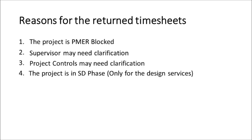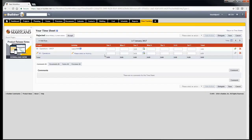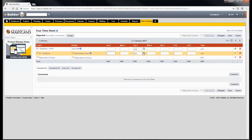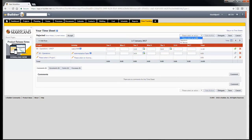If you are on design services, please make sure you always select the schematic design activity option if the project you are charging is in SD phase. To check if your project is in SD phase, please contact your supervisor. This only applies to design services team members. Once you find the appropriate timesheet that needs revision, edit your hours accordingly. Then click Resubmit and the Take Action button to resubmit your timesheet.